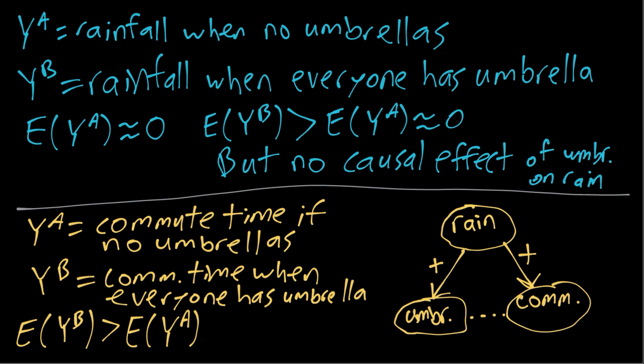It has this causal effect on both the outcome we're interested in, the Y variable, as well as the other variable we're studying, in this case umbrellas. So it can make it appear as if maybe umbrellas cause longer commute times because it induces this sort of statistical relationship even though there is no causal relationship. That's one of the main obstacles or pitfalls we will need to watch out for if we do want to learn about causal effects.